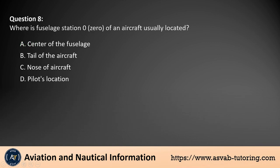Question 8. Where is fuselage station 0,0 of an aircraft usually located? A. Center of the fuselage. B. Tail of the aircraft. C. Nose of aircraft. D. Pilot's location.